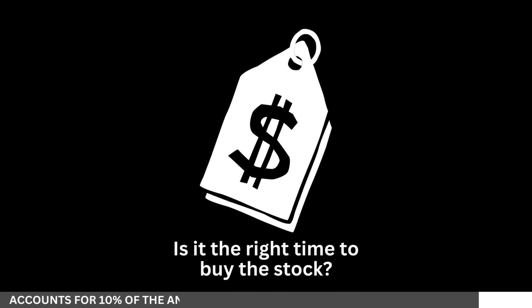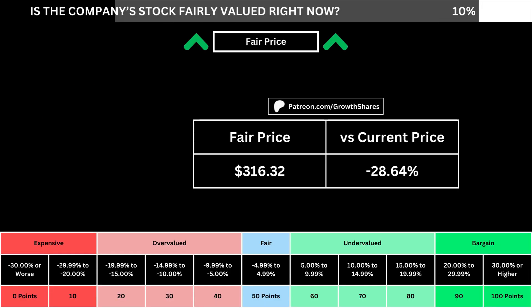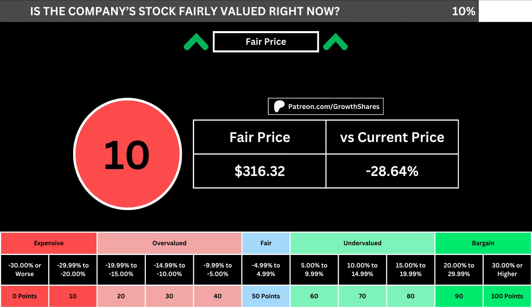But of course, we can't forget about the fair price and whether it's the right time to buy the stock. I use a discounted cash flow model taking into account a 10% margin of safety. That translates into the company's fair price and how many percentage points above or below its current price the stock is. When we compare those numbers with the table below, we can see where the company's stock lies in its intrinsic value spectrum right now.